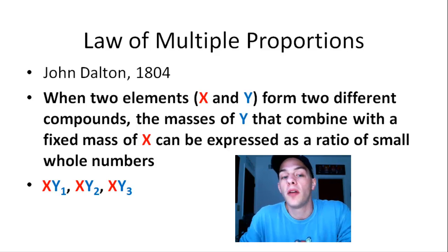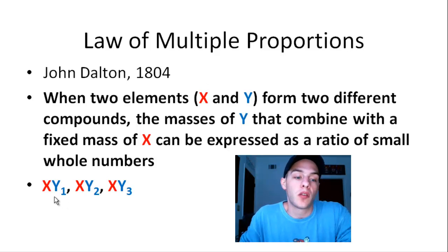So in other words, if you have two elements forming two different compounds, and one of those elements, there's only one atom of it, but then you allow the atoms of the other element to change. So in other words, if I have XY1, XY2, XY3, etc., keeping the amount of atoms of X constant at 1, and then allowing the number of atoms of Y to change.